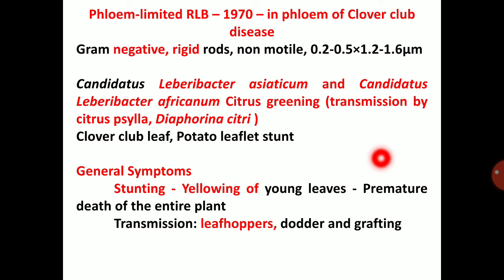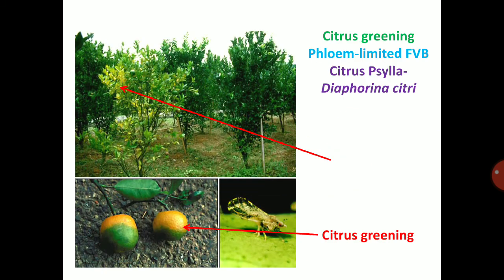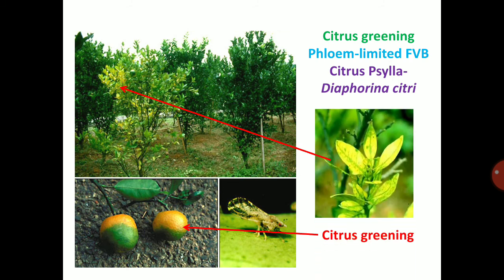General symptoms of phloem-limited RLB: stunting, yellowing of young leaves, premature death of entire plant. Transmission by leafhopper, dodder, and grafting. Citrus greening symptom — infected fruits give green color appearance at their distal end after maturity. Leaf symptom shows yellowing and stunting appearance.